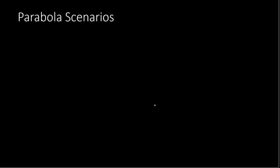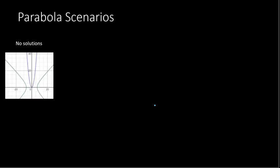Now we're going to look at strictly quadratic systems, where you have two quadratic equations. First, we could have possibly no solutions — you see that picture where the parabola is in the middle between the two parts of a hyperbola. This has no solutions, and if you were given the equations, you could graph them to confirm there would be no solution.